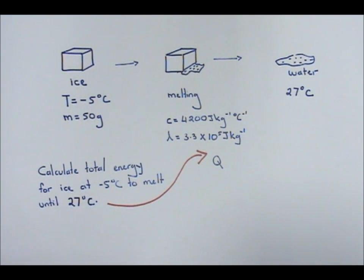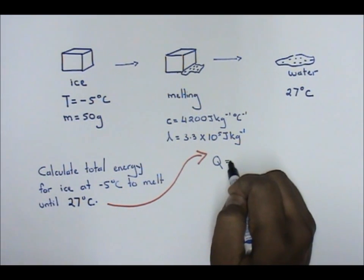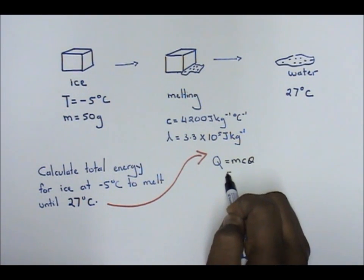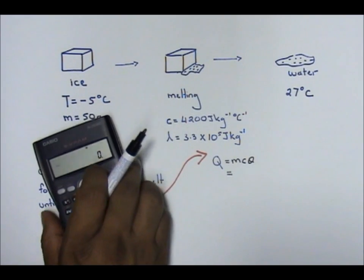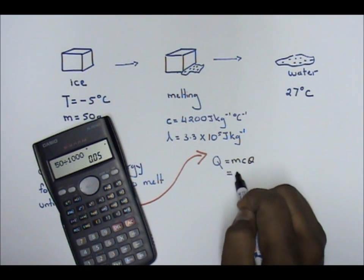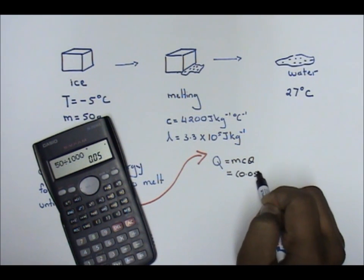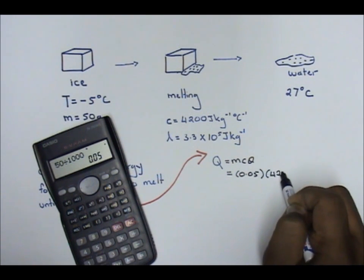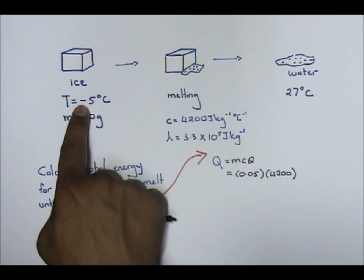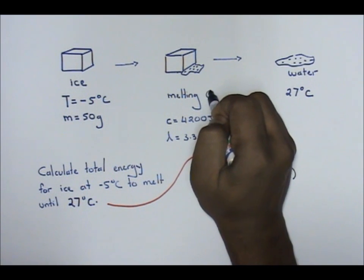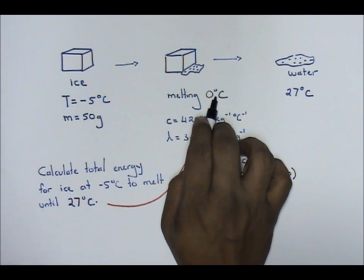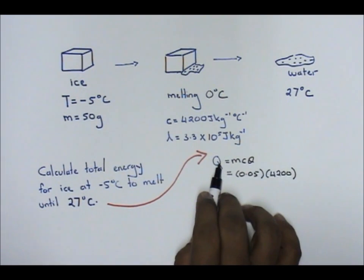First calculation: q equals to mc theta. Your m is given to you as 50 grams, so 50 divided 1000, your m is 0.05. Your c is 4200. From negative 5, melting occurs. Remember, ice melts at 0 degree Celsius.